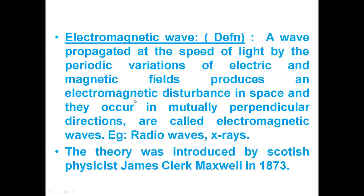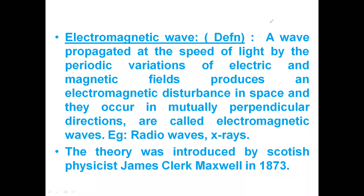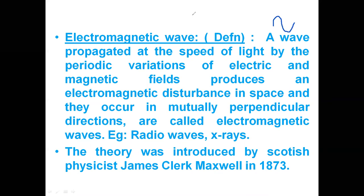Let me draw this so it will be good for you. Suppose the electrical field is oriented like this and the wave is propagating in this direction, then the magnetic field will be 90 degrees to the electrical field. So the electrical field and magnetic field are at right angles to each other — that is, 90 degrees. That is what we call an electromagnetic wave.